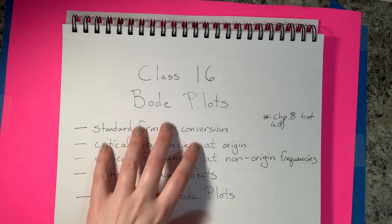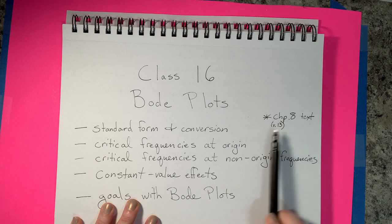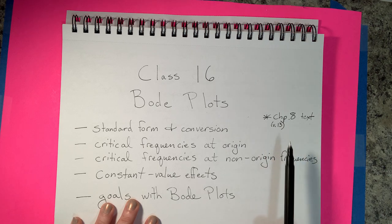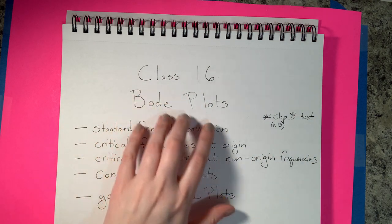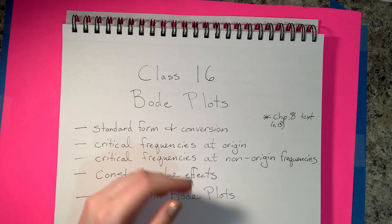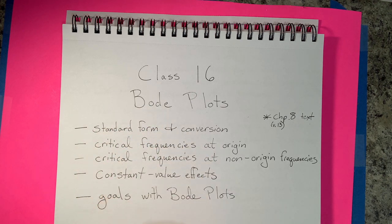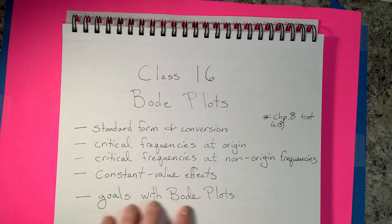The Nyquist plot has a set of specific criteria which allows us to see if a system, given the open-loop transfer function, is stable or not — for the closed-loop system. We'll talk more about Nyquist in the next lecture, but for now let's concentrate on how to draw a Bode plot and what they are and why they're useful. Chapter 8 in your text, if you're using version 13, really talks about frequency analysis in general and Bode plots is a section in that — I believe section 2.